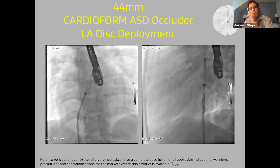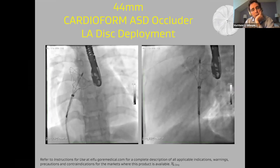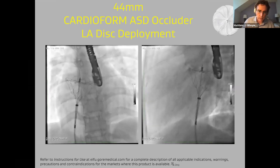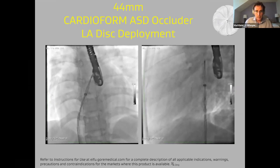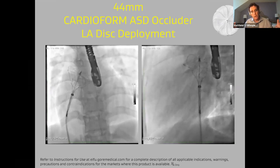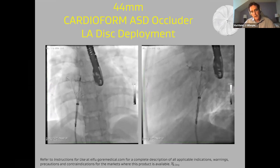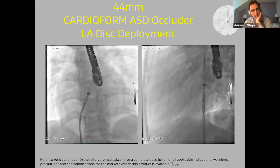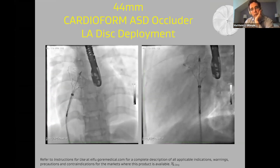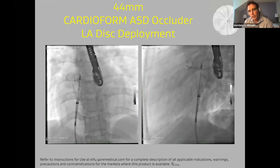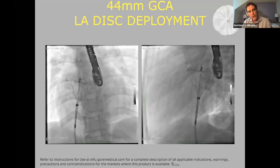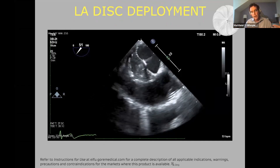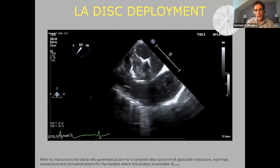Here's the LA disc deployment in a LAO cranial view on the left panel and straight lateral on the right. As you form the LA disc, you get tactile feedback on the handle that tells you when you've reached maximum LA disc deployment — you can feel it in the handle and see it on fluoro. You can see the wide LA disc, flat at the distal end, tapering down to the beginning of the RA disc with the waist bunched up. You want to open the LA disc, pull it up against the atrial septum, and there is tactile feedback you can feel. This is what that looks like by TEE — the LA disc completely full, pulling it back against the atrial septum.